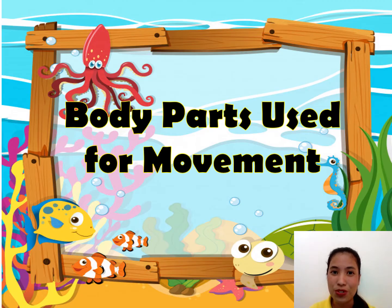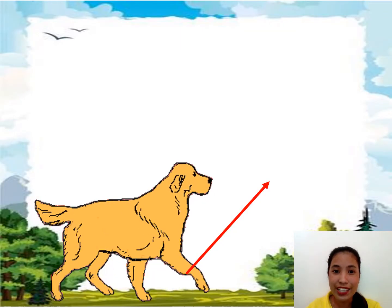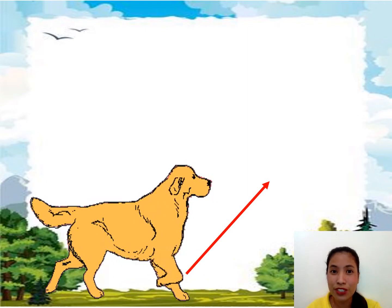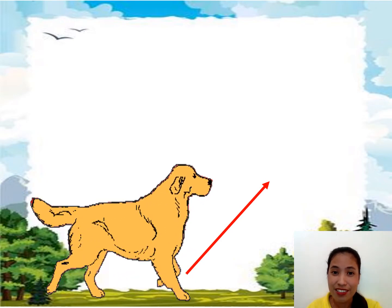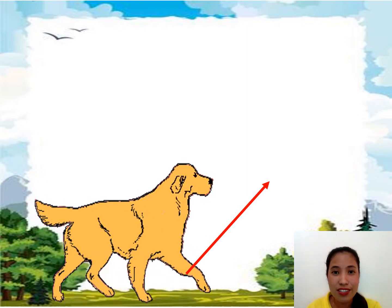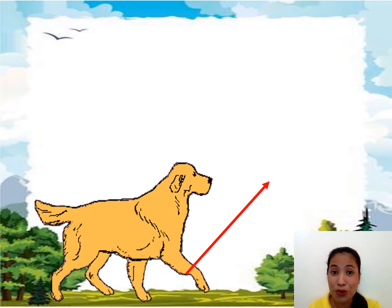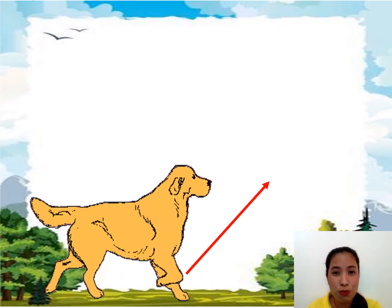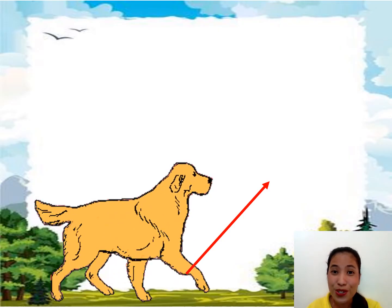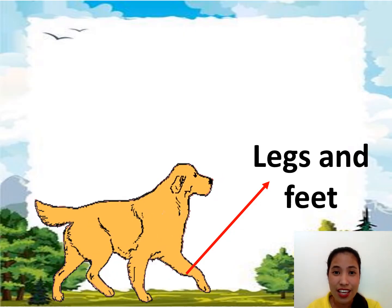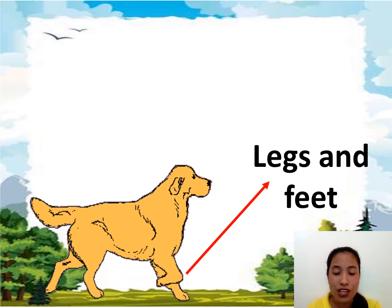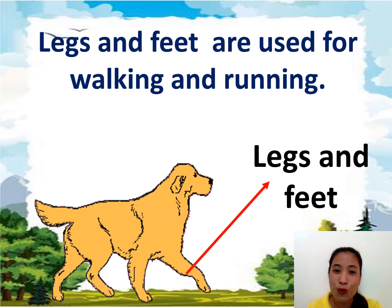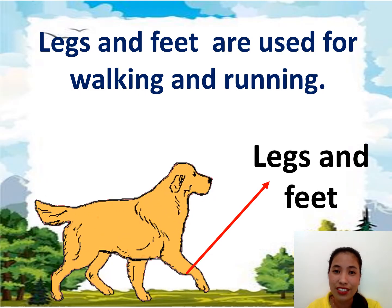Look at the dog in the picture. What is the movement of the dog? The dog is walking — it can also run. What does the dog use to move? Their legs and feet. Legs and feet are used for walking and running.